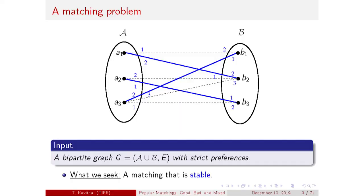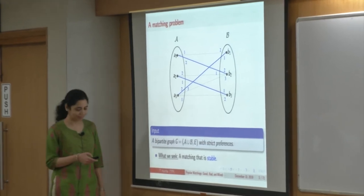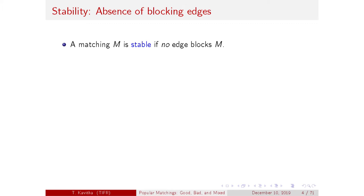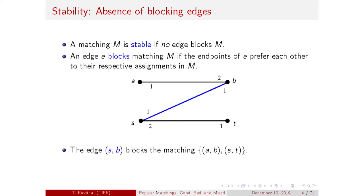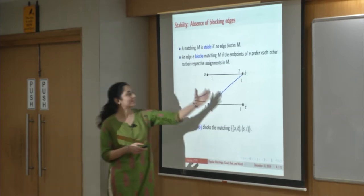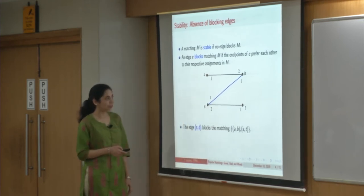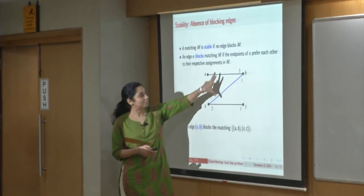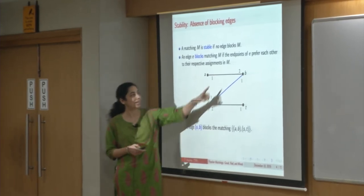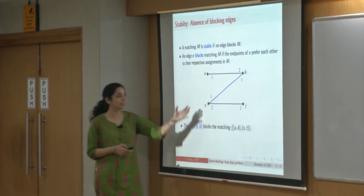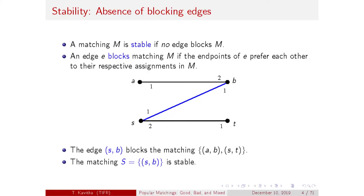What one seeks is a stable matching. A matching is stable if it has no blocking edge. An edge blocks a matching if the endpoints strictly prefer each other to their respective assignments in the given matching. We assume strict preferences throughout. In this small example, the matching consisting of the black edges is not stable because the blue edge SB blocks it — both S and B prefer each other to their respective partners in the black matching. However, there is a stable matching: the singleton edge SB.